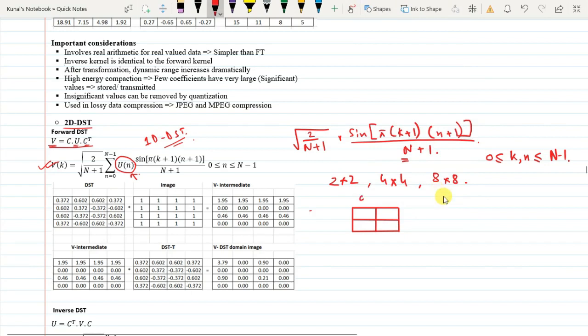For a 2 by 2 matrix, our n equals 0 and 1, and k equals 0 and 1. For n equal to 0, k equals 0, this is 0 plus 1, so this is 1. So sine of pi divided by, n is 2 plus 1, which is 3, so this is 2 by 3. For n equals 0, k equals 0, we get root 2 by 3 sin pi by 3.